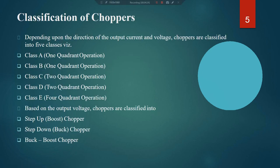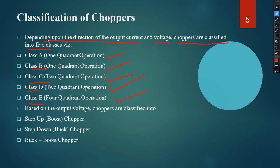Depending on the direction of output current and polarity of voltage, choppers can be classified into five classes: Class A (one-quadrant operation), Class B (one-quadrant operation), Class C (two-quadrant operation), Class D (two-quadrant operation), and Class E (four-quadrant operation). Based on output, choppers can also be classified as step-up or boost chopper, step-down or buck chopper, or buck-boost chopper.